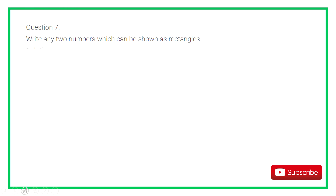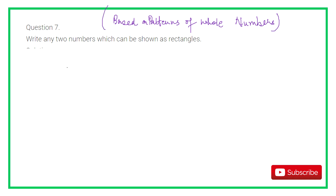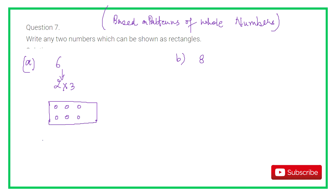Question 7: Write any two numbers which can be shown as a rectangle. This question is based on patterns of whole numbers. Six and eight are two such numbers. Six equals 2 into 3, so we make 2 rows and 3 columns. Eight equals 4 into 2, so we make 4 rows and 2 columns.